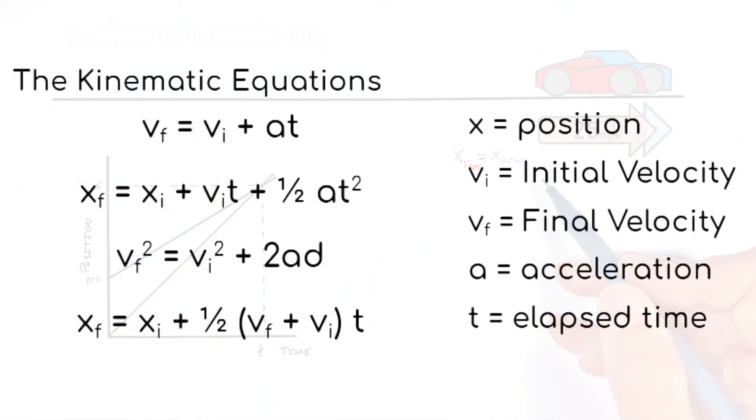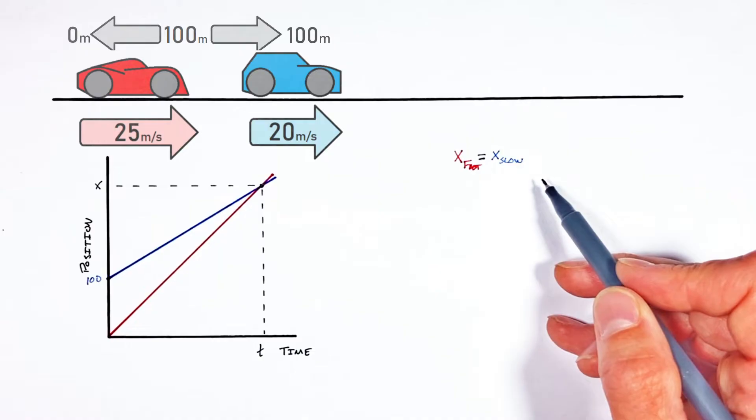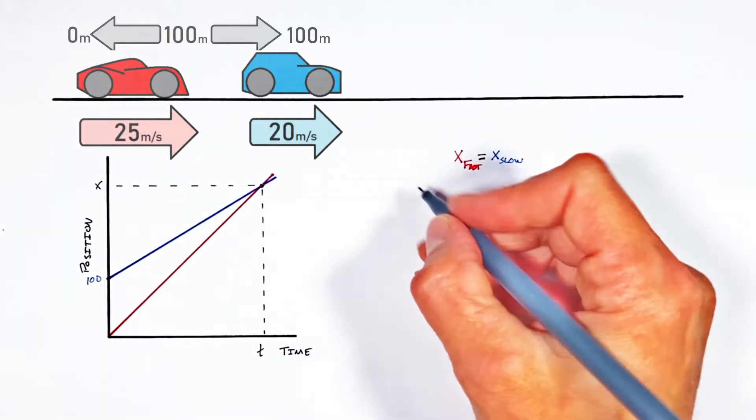And this is the point where we turn to the kinematic equations. You see, there's one kinematic equation which relates the position of an object at any point in time to its initial position, velocity, and acceleration. And really all we're going to do is take that equation and apply it to each of our vehicles.